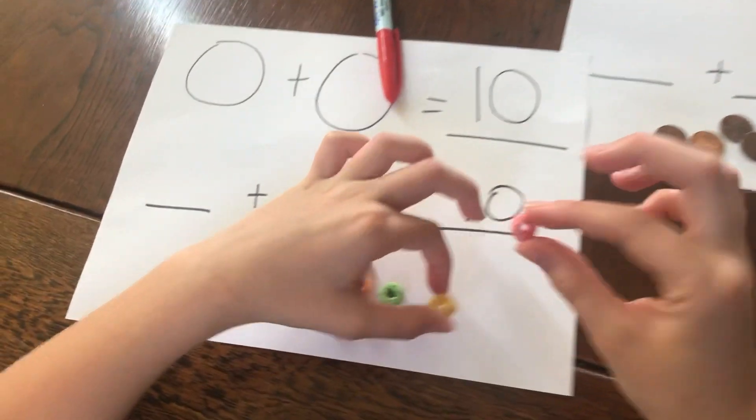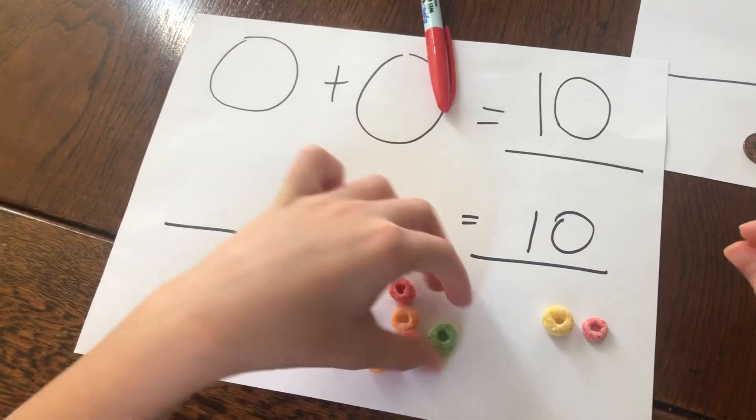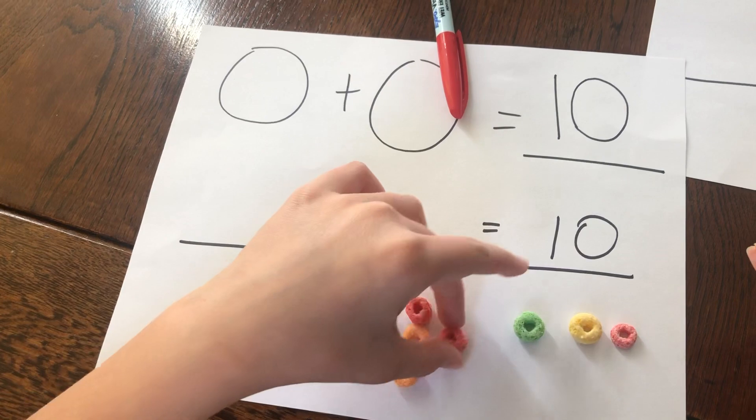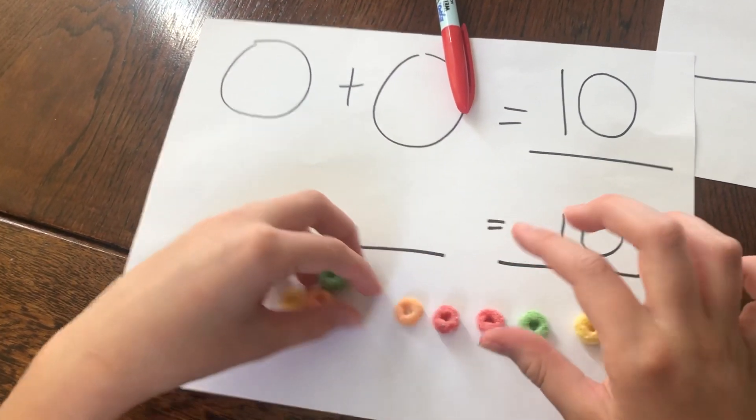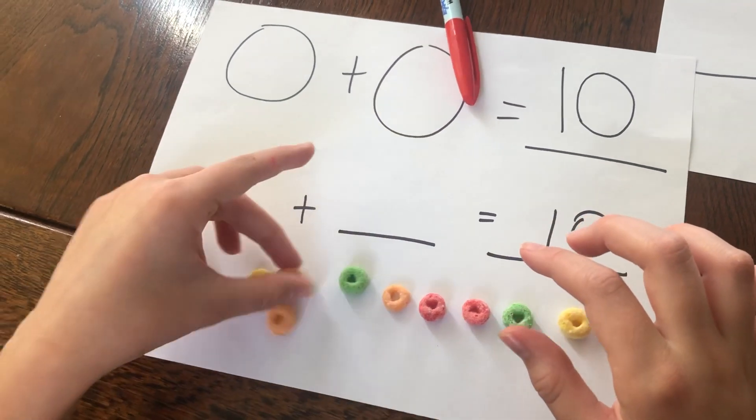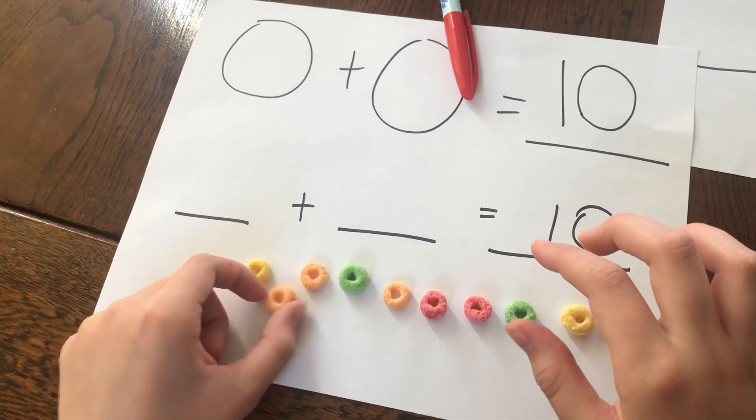So let's count all my fruit loops to make sure I have ten. One, two, three, four, five, six, seven, eight, nine, ten.